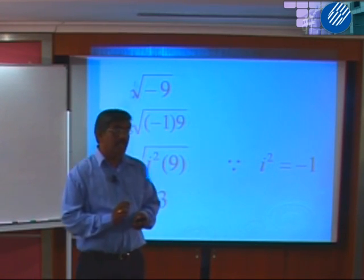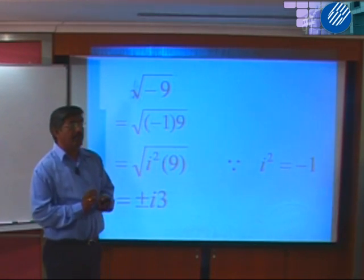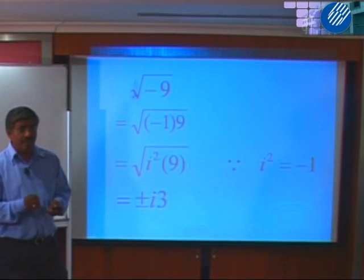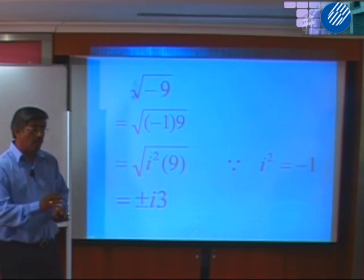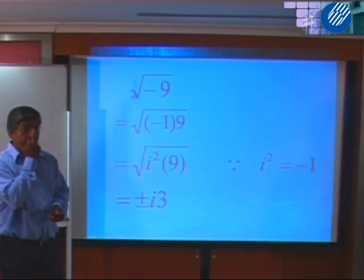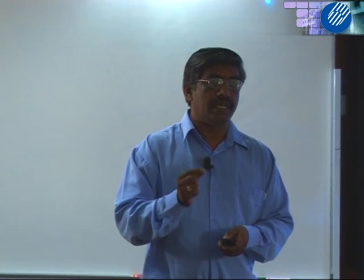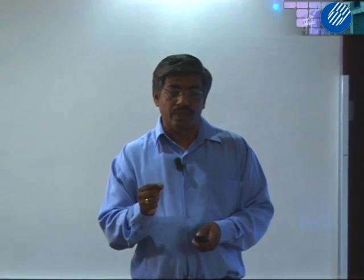So the square root of minus 9, which is an imaginary number, can be solved using the i notation, and the value can be written as i3, with plus or minus 3. This i, as defined earlier, is the notation for an imaginary value. This is the basic principle of a complex number's existence.